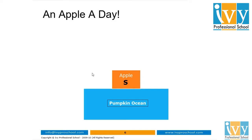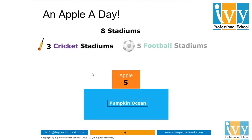So we have our object of attention. Now if I want to know how many stadiums are there in this country, I can now do it easily. There are eight stadiums, out of which three are cricket stadiums and five are football stadiums. Out of the three cricket stadiums in country Apple, two stadiums host matches all throughout the year.